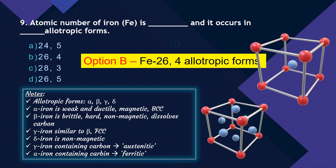To summarize the allotropic forms: alpha iron is weak and ductile, magnetic, BCC — similar to mild steel. Beta iron is brittle, hard, non-magnetic, and dissolves carbon — similar to cast iron. Gamma iron is similar to beta but with FCC structure. Delta iron is non-magnetic. Gamma iron containing carbon is austenitic; alpha iron containing carbon is ferritic.